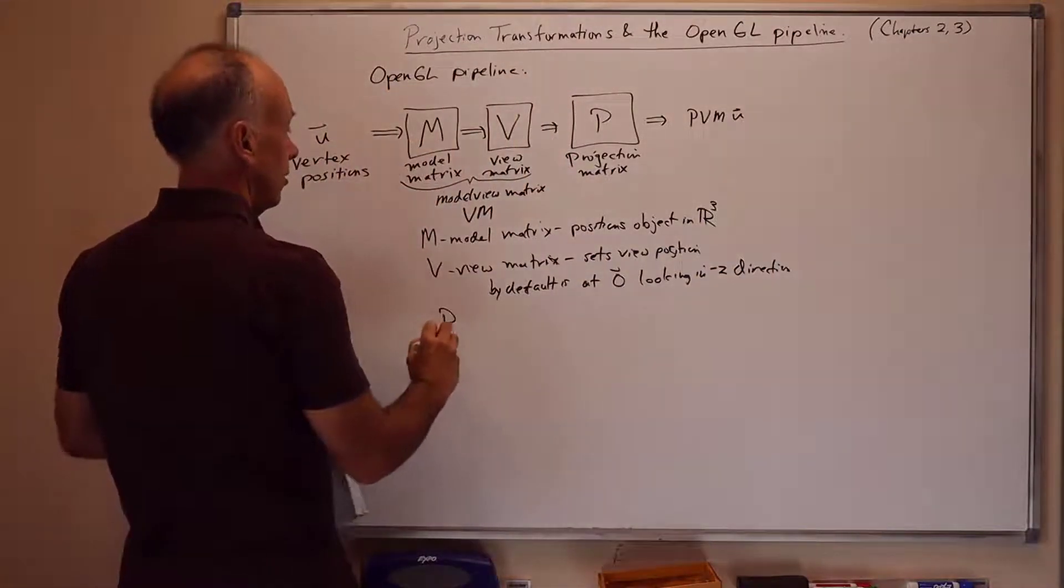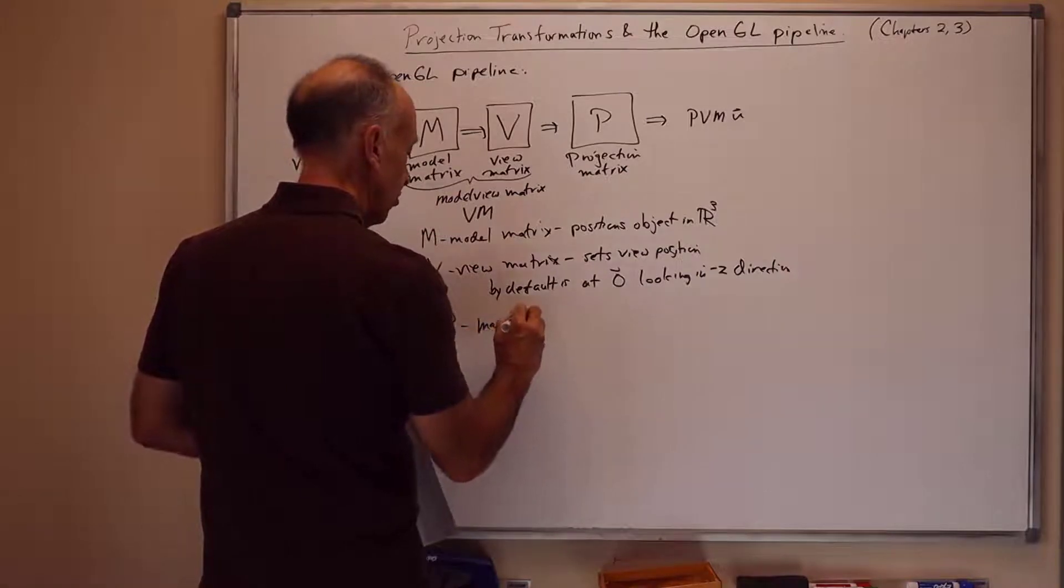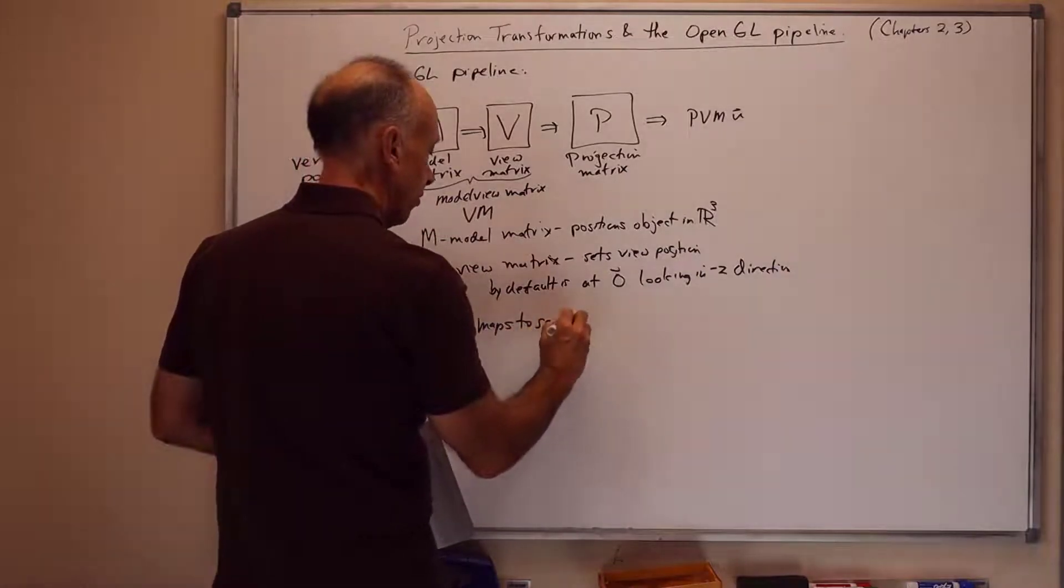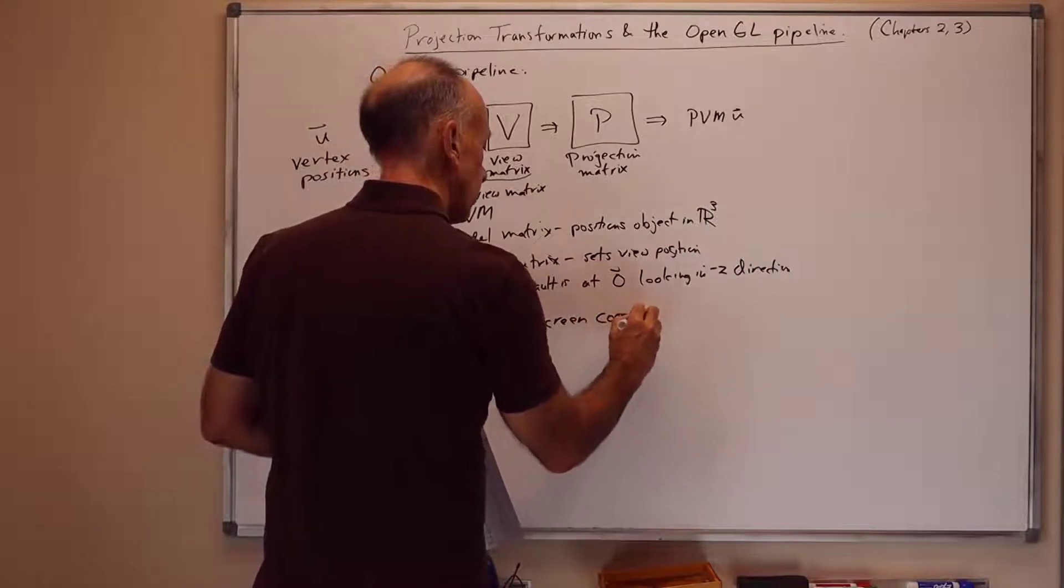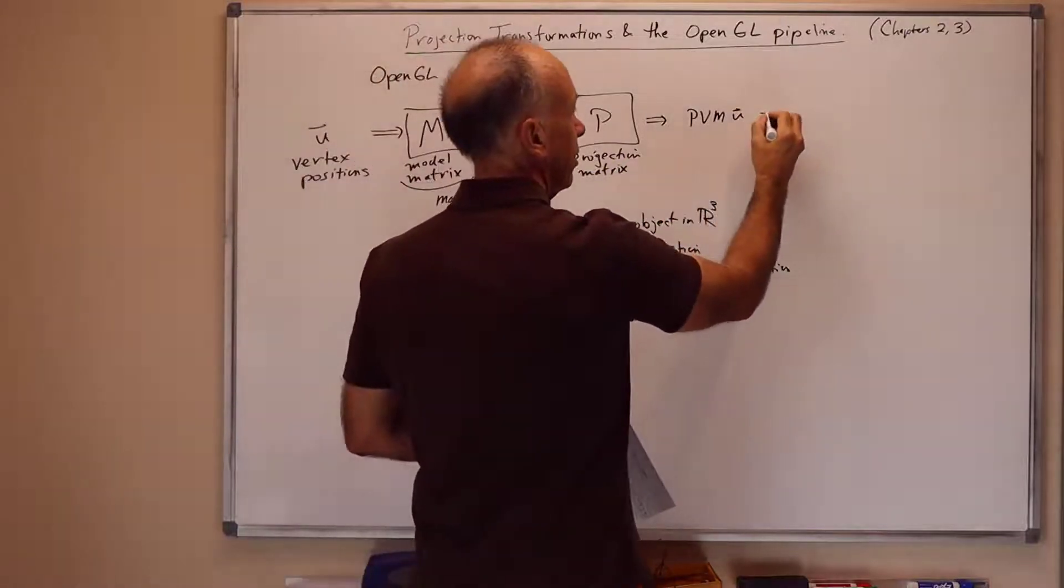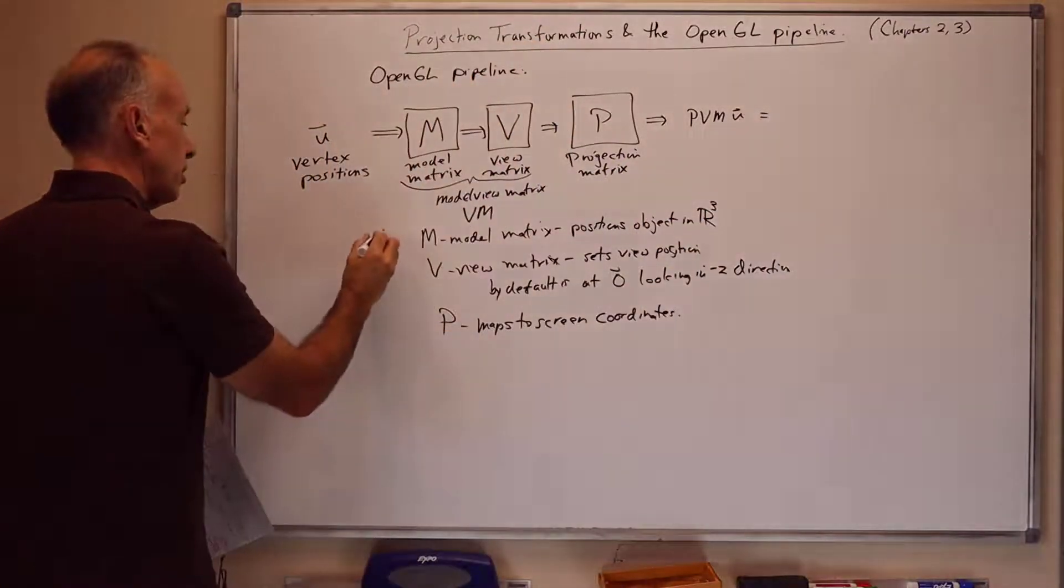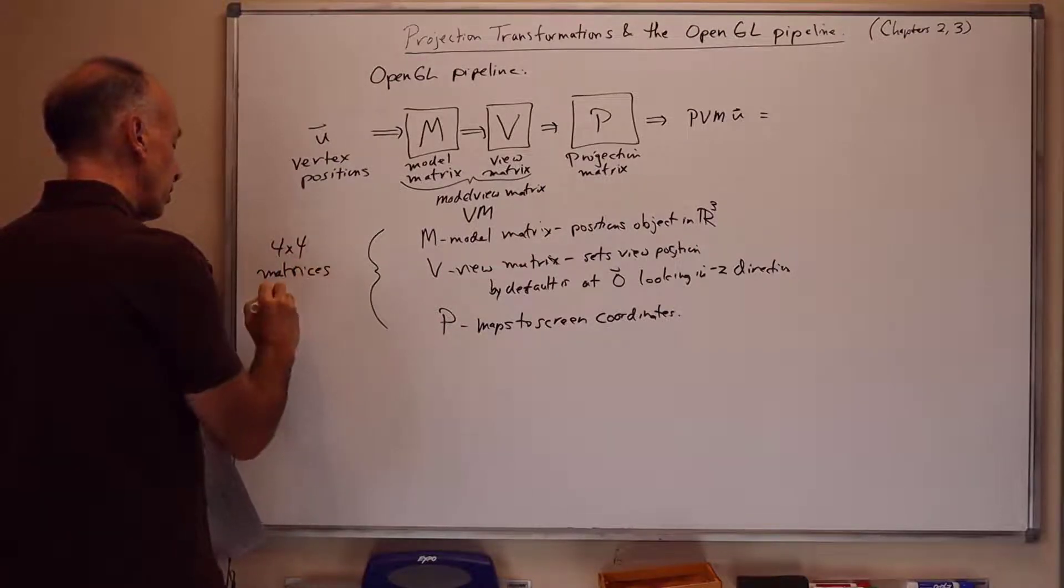The view matrix is used to adjust this. And then the projection matrix maps to screen coordinates, or whatever output imagery we have. So what comes out of this is when we do this, these are all 4 by 4 matrices.